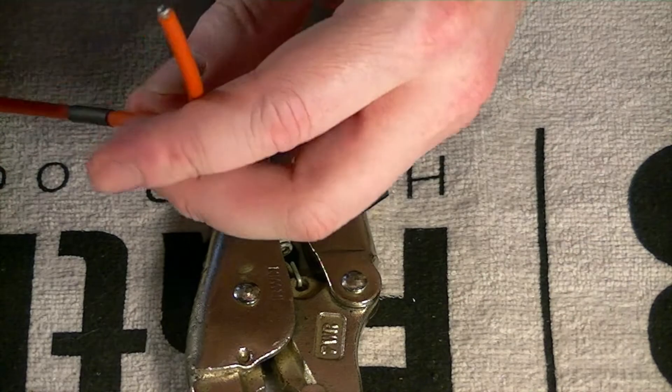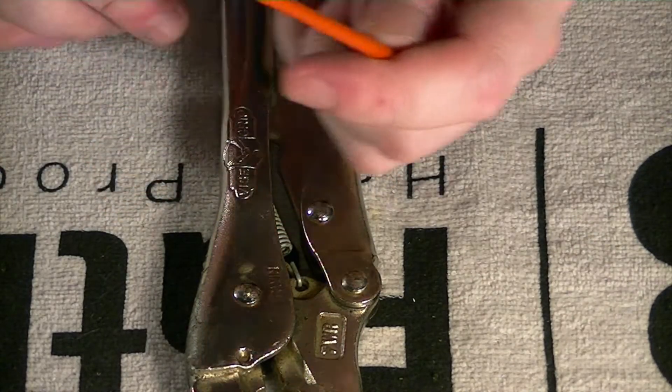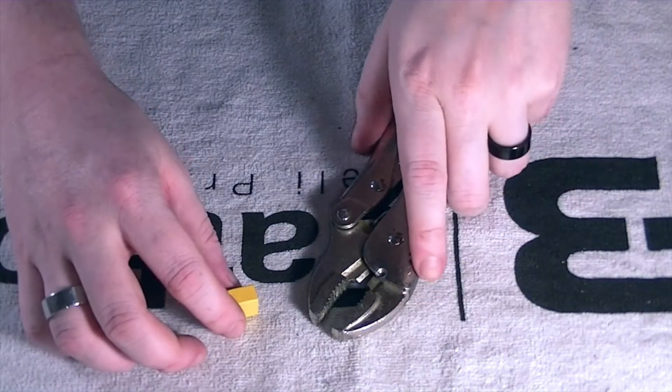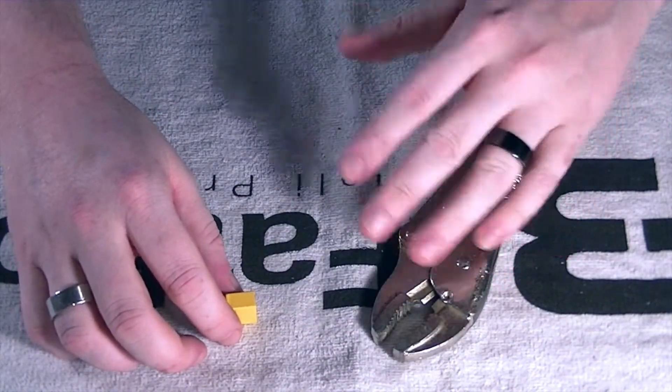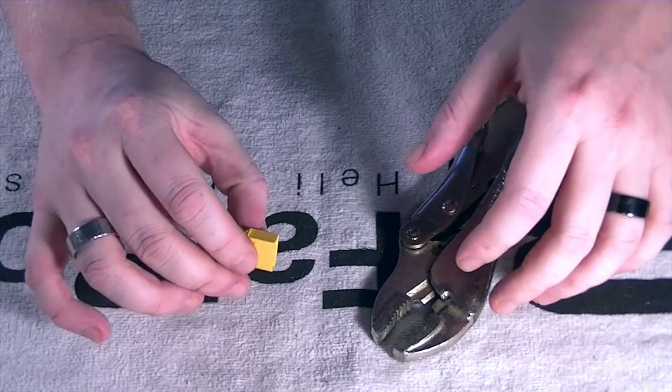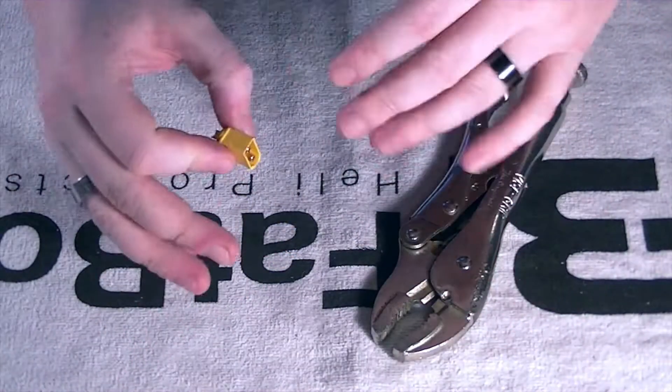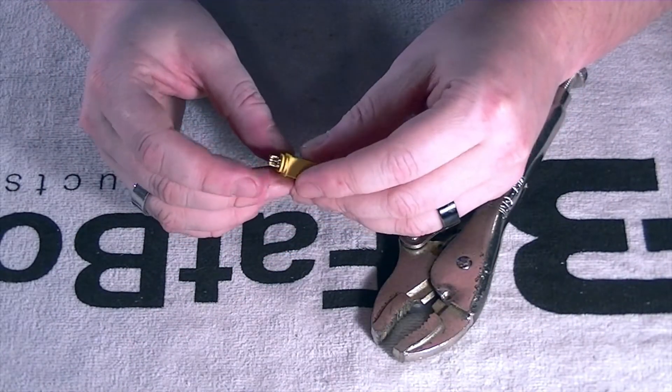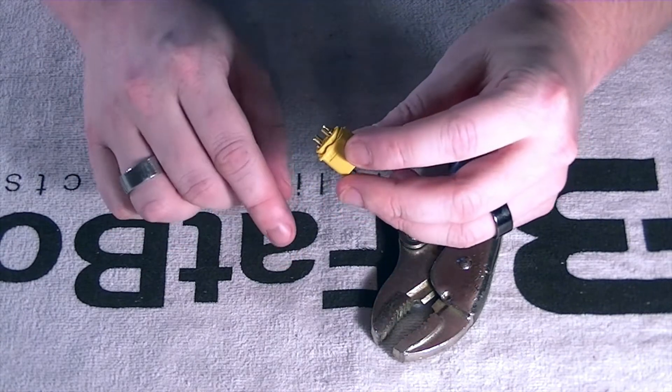And we'll slide our heat shrink on like that. Okay, and then let's go ahead and we'll get ready and we'll pre-tin the connector. Alrighty guys, so now that we've got the wire pre-tinned, we've got the heat shrink on there, we've got our cap on there or what have you based upon what kind of a connection joint you're making.